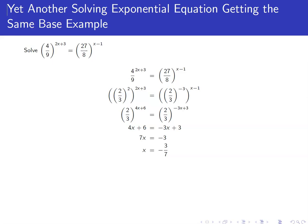We're being asked to solve the equation 4 ninths raised to the 2x plus 3 equals 27 eighths raised to the x minus 1.